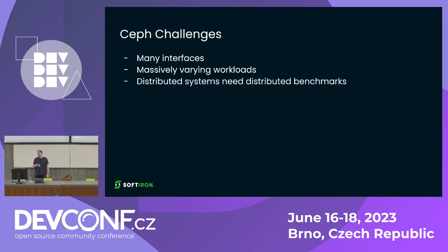Another issue is that distributed systems need distributed benchmarks. Because Ceph's performance scales linearly as you add OSDs to the cluster, you also need to scale your benchmarking tooling in a very similar way to make sure you're not limited by your benchmarking architecture. The driver or worker nodes you're using to benchmark — client nodes as some people call them — need to not be the bottleneck. You need to have enough client nodes to fill up the Ceph pipe.